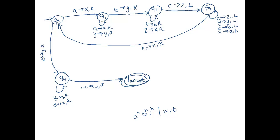The way the machine currently works, it requires reading an A first. However, our language requires N greater than or equal to zero, so we must be able to accept the empty string. If we start the machine and see a blank on the tape — that's the empty string — we move right and accept. As long as we haven't introduced any errors, this is our Turing machine for this language.